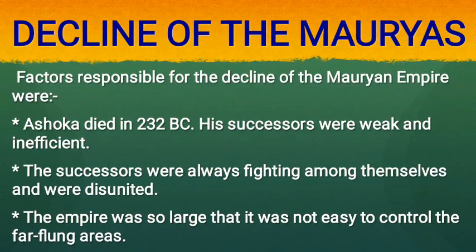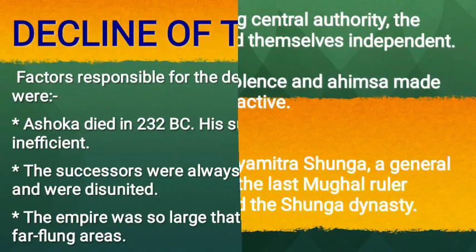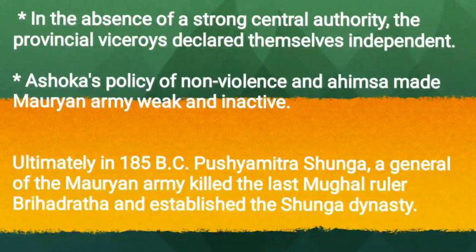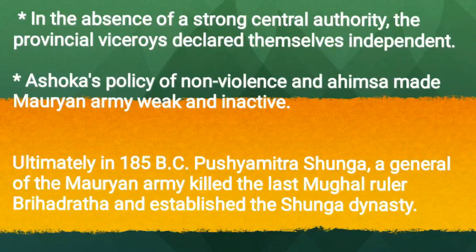Decline of the Mauryas: Ashoka died in 232 BC. His successors were weak and inefficient, always fighting among themselves and disunited. The empire was so large that it was not easy to control the far-flung areas. In the absence of a strong central authority, the provincial Viceroys declared themselves independent. Ashoka's policy of non-violence and ahimsa also made the Mauryan army weak and inactive. Ultimately, in 185 BC, Pushyamitra Shunga, a general of the Mauryan army, killed the last Mauryan ruler Brihadratha and established the Shunga dynasty.